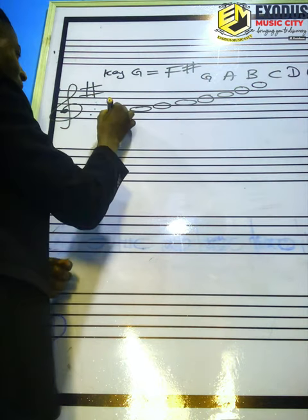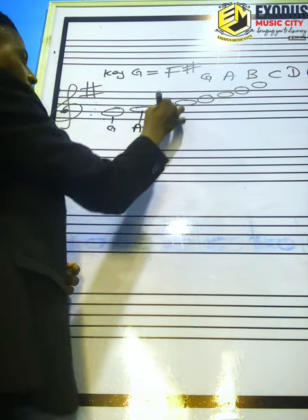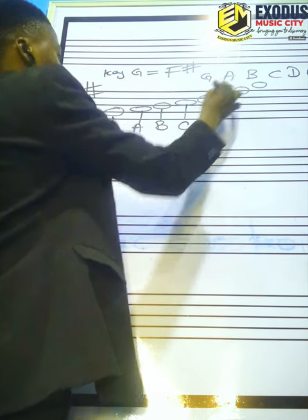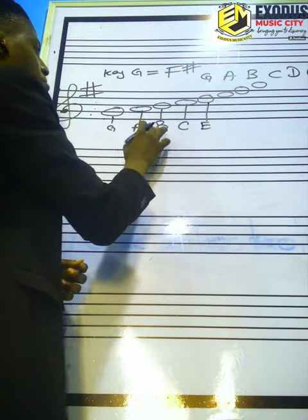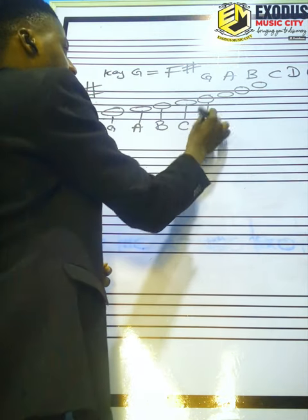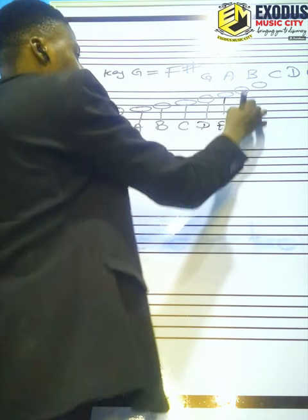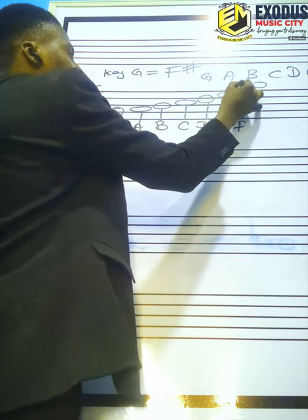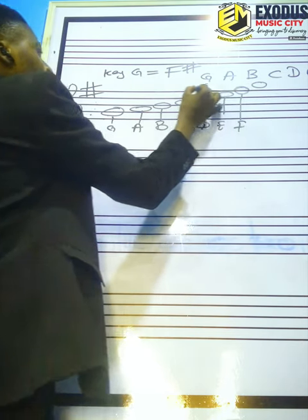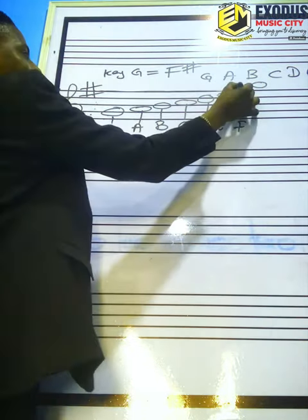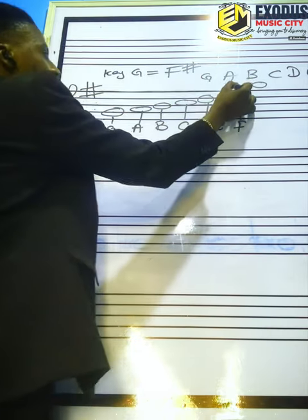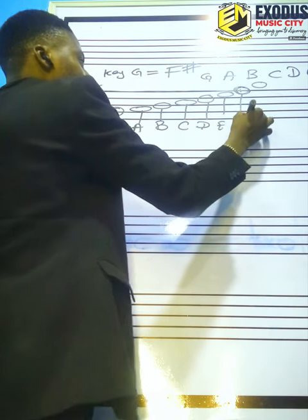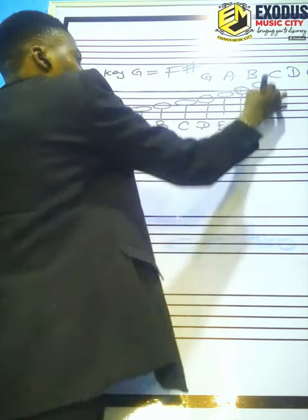Now let's write out the notes. This is G, this is A, this is B, this is C, this is D, this is E, then this is F. The key signature line has been sharpened, making it F sharp. So the notes are F sharp and then G.